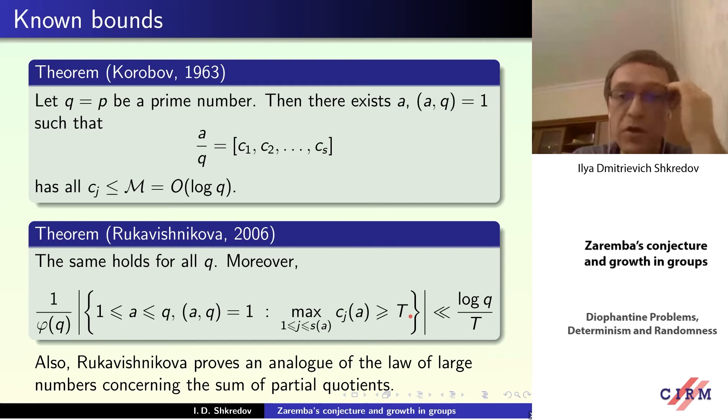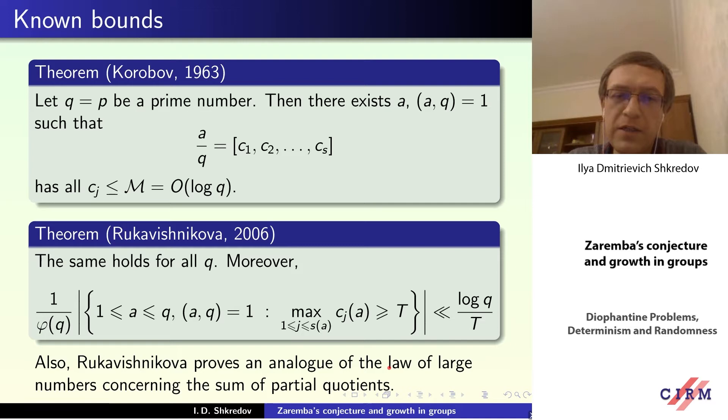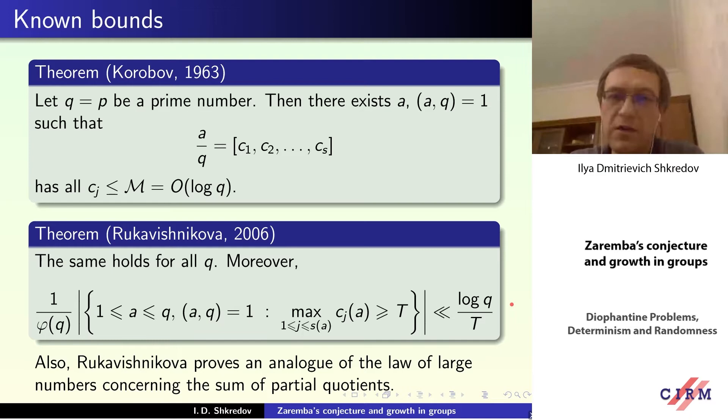Rukavishnikova obtained a series of probabilistic results — like a central limit theorem for partial quotients — demonstrating, for example, that the number of a coprime to q such that the maximum of all partial quotients of a over q is greater than t is bounded by log(q) over t. So once again, a typical a gives us logarithm for m.